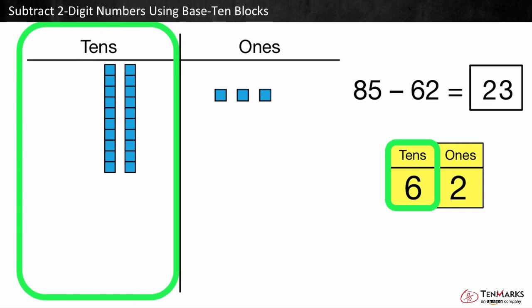What is the difference? There are two 10s and three 1s left. 85 minus 62 is equal to 23.